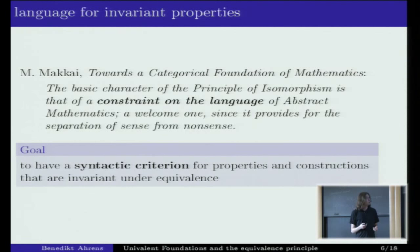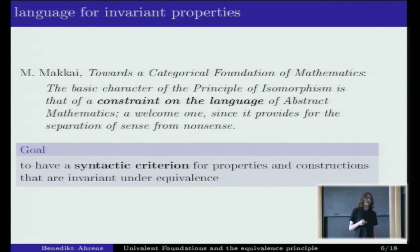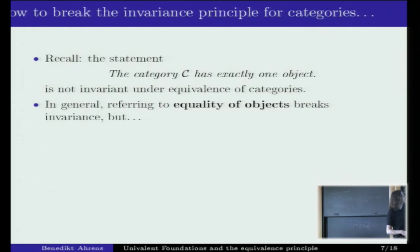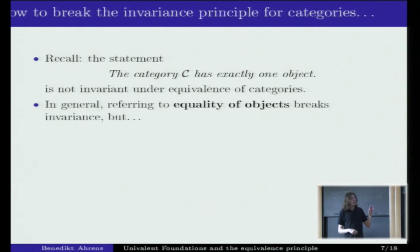One goal of this equivalence principle is to have a syntactic criterion for properties and constructions that are invariant under equivalence. Staying with the example at the level of categories, we had the statement that was not invariant: the category C has exactly one object.